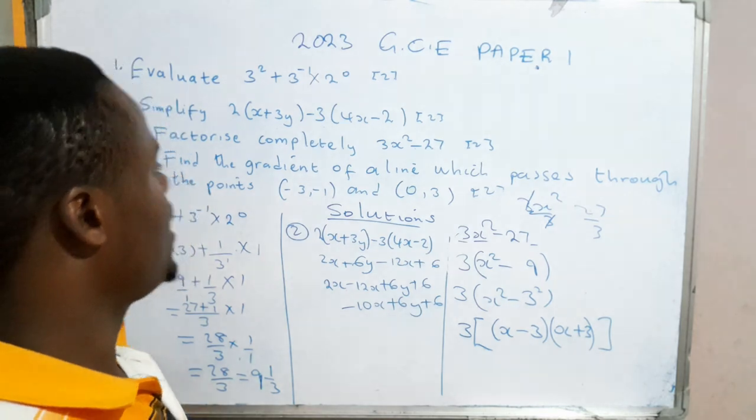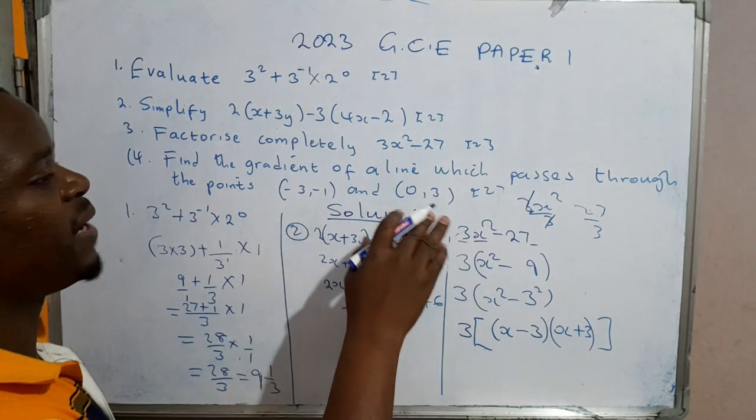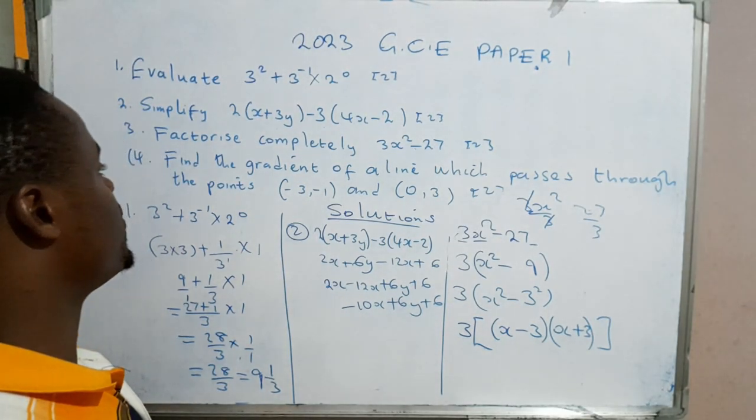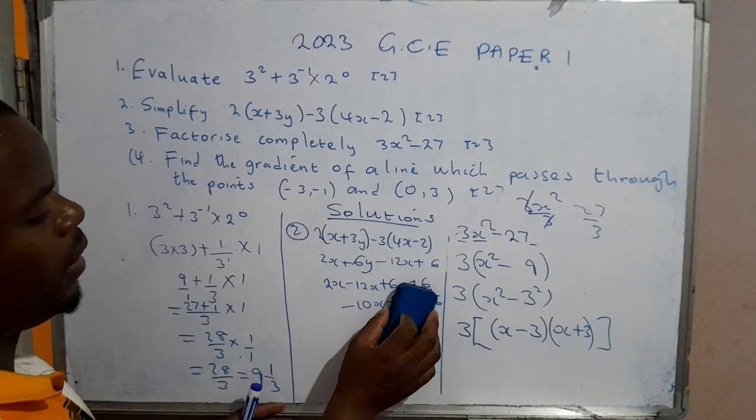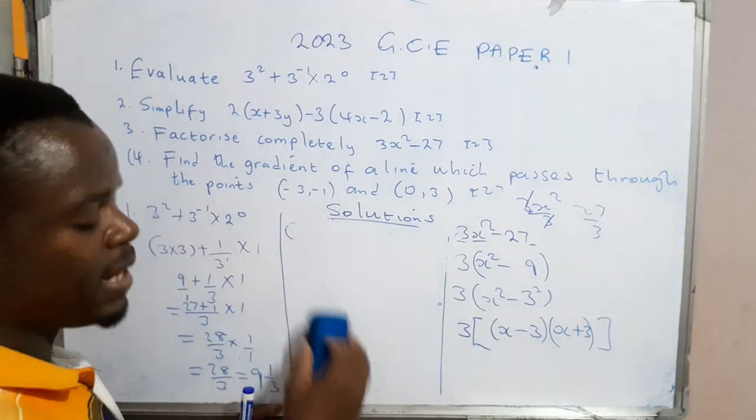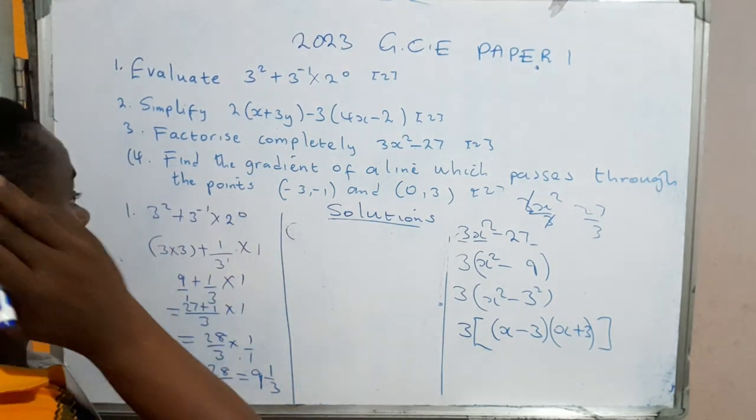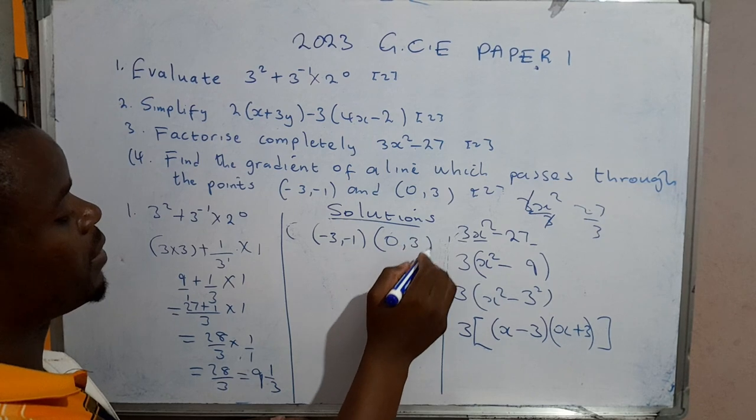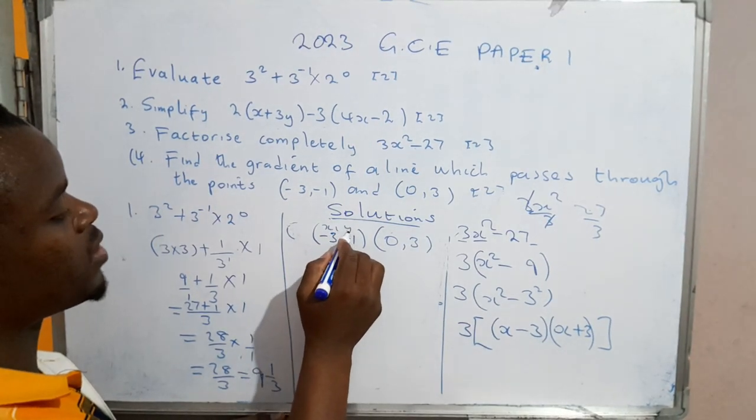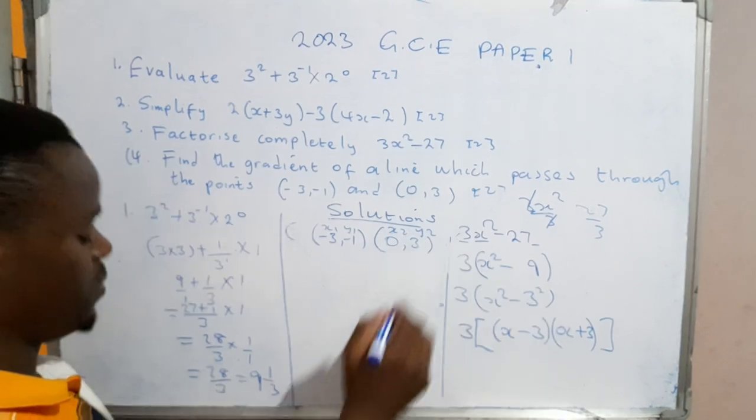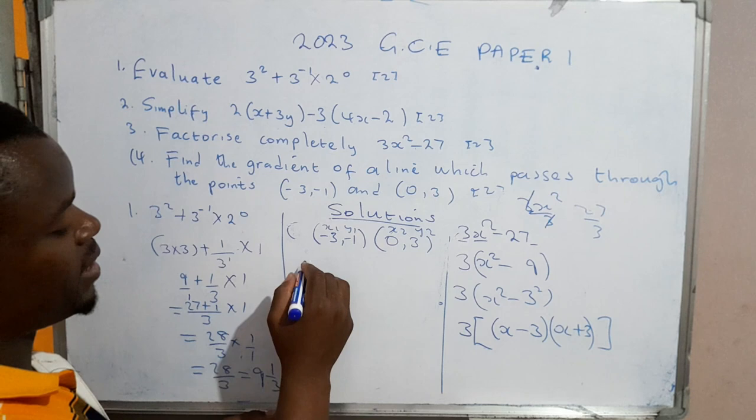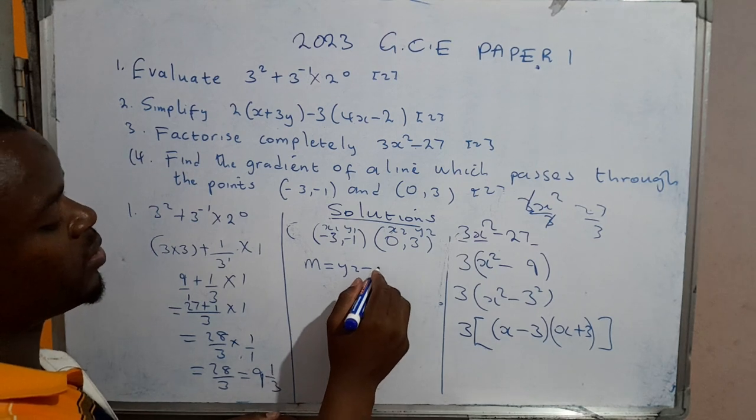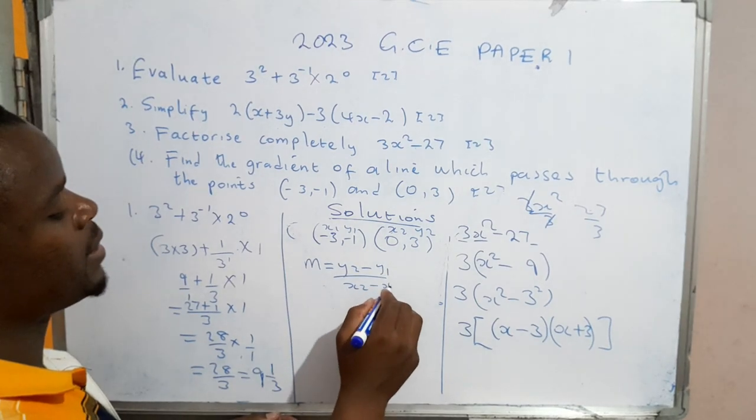Let's move on to number four. They say find the gradient of the line which passes through the points (-3, -1) and (0, 3). For you to determine the gradient, you first identify the x and y components in terms of the first and the second. Label them: this is x₁, that's y₁, x₂, y₂. From here you can write the equation for finding the gradient.